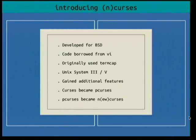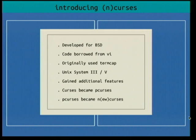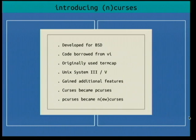So introducing NCurses — finally. Originally developed for BSD, it actually borrowed code from Vi, which is my preferred editor. Vi had a lot of cursor manipulation features, and NCurses took from that; now Vim borrows from NCurses, so it's a good relationship. Originally used termcap, now uses terminfo. It was moved to Unix System III — not ported because there were issues, but re-implemented. It gained new features like color, easier line drawing, and new video modes like bold and underline. Curses then became pcurses due to licensing issues and later became NCurses.